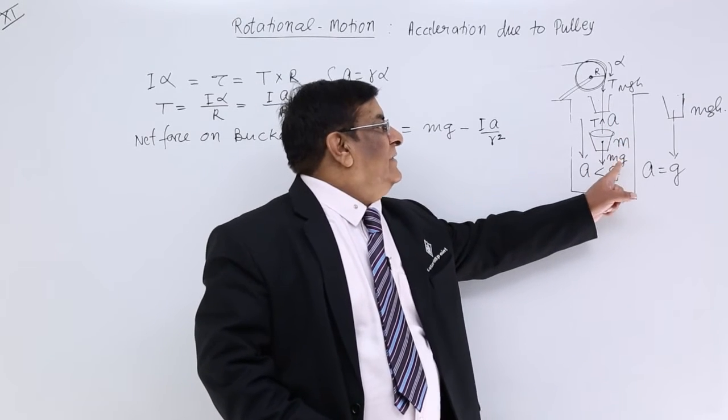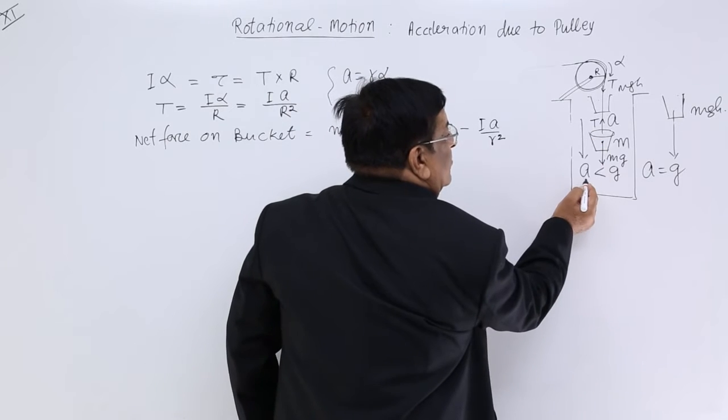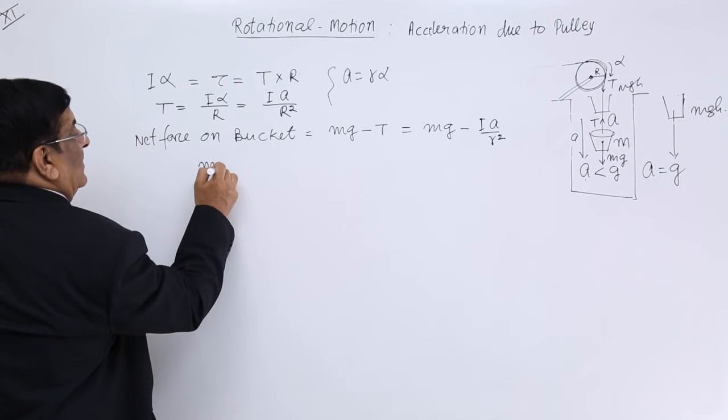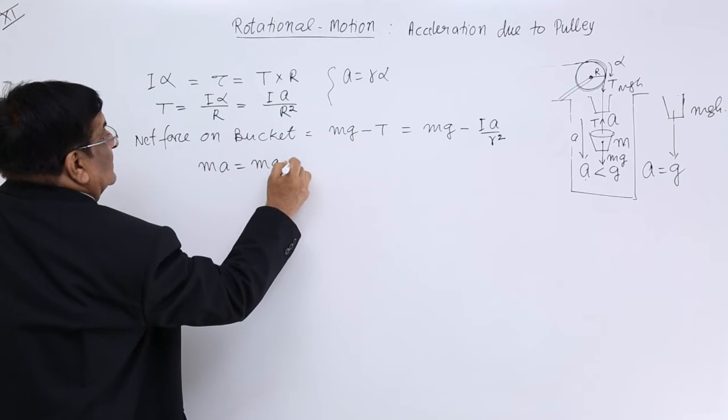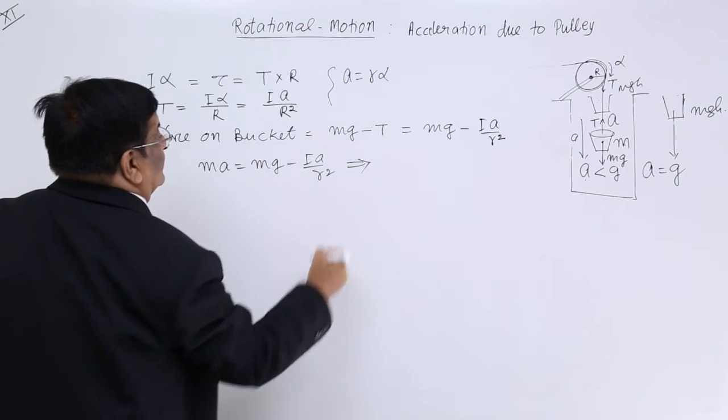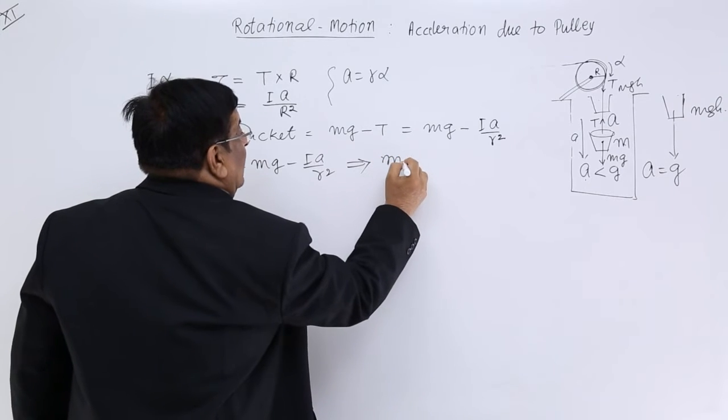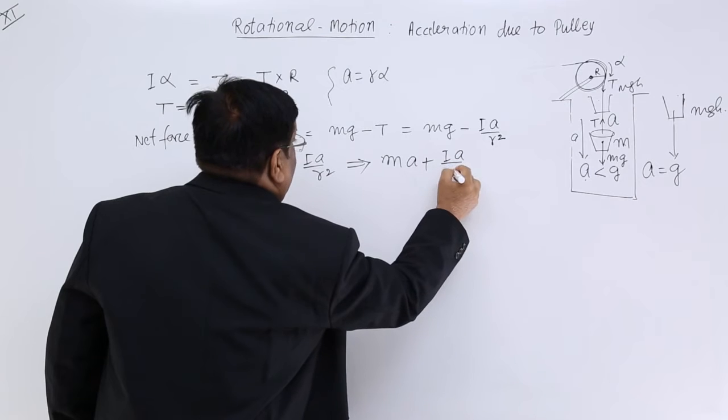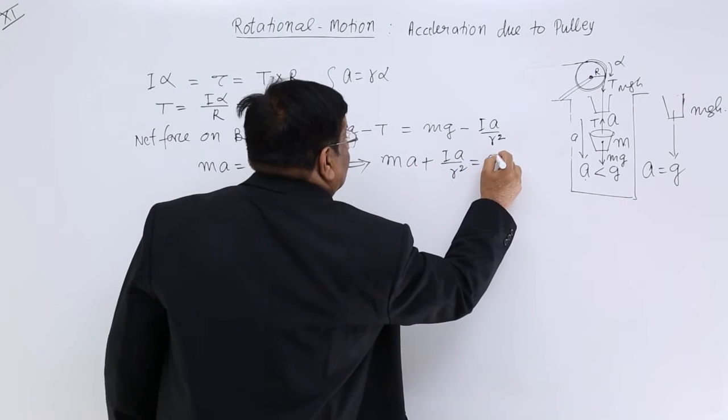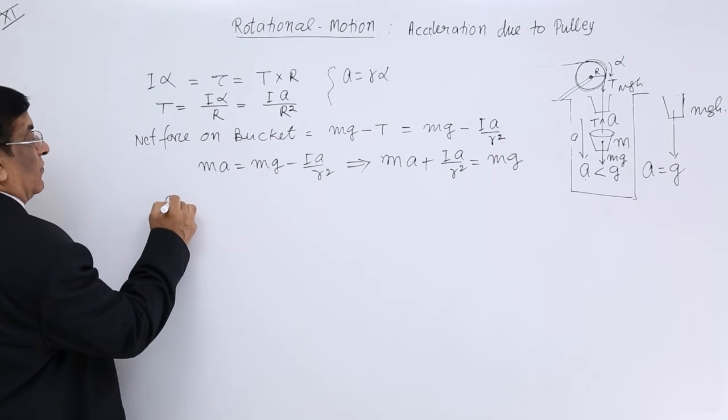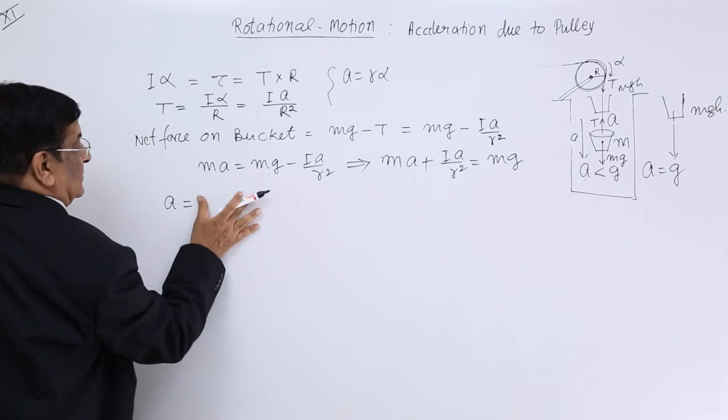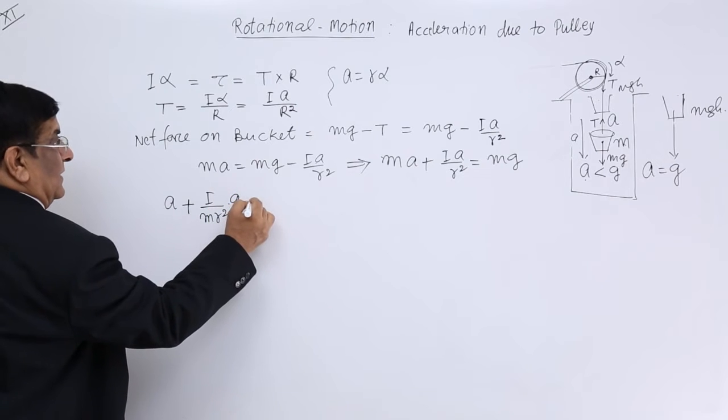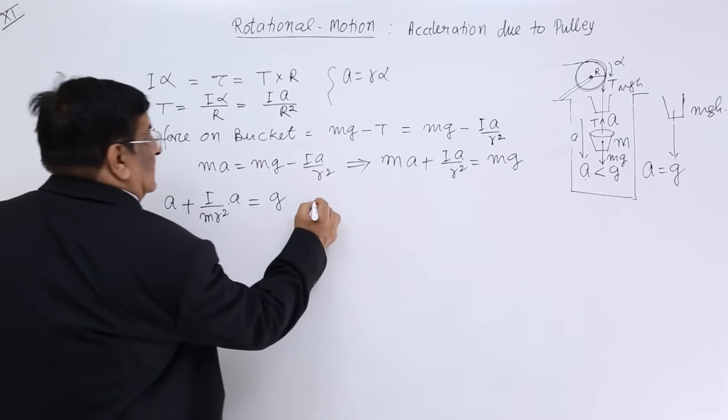Now this body has got mass m, falling down with acceleration a. Final acceleration, net acceleration is how much? a. So what is the net force on this? Mass into acceleration, ma. So the net force ma is equal to mg minus I a upon r square. Take a terms on one side. So this is ma plus I a upon r square is equal to mg. Divide with m on both sides. So what we get is a plus I upon m r square times a is equal to g.